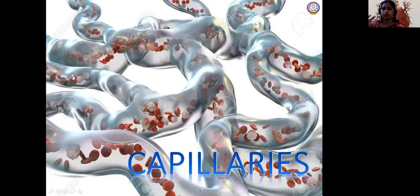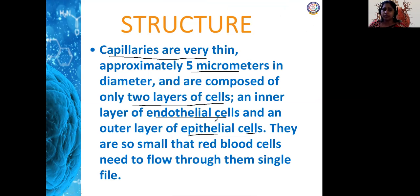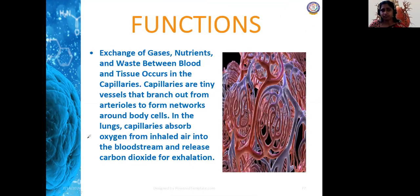The tiny vessels connecting arteries and veins like a web are capillaries. The structure of a capillary: it is very thin — about 5 micrometers in diameter — composed of two cell layers: inner endothelial cells and outer epithelial cells. RBC need to flow through them in a single file, that is how thin they are. The function of capillaries: exchange of gases, nutrients, and waste between the blood and tissues — an important one-mark point.